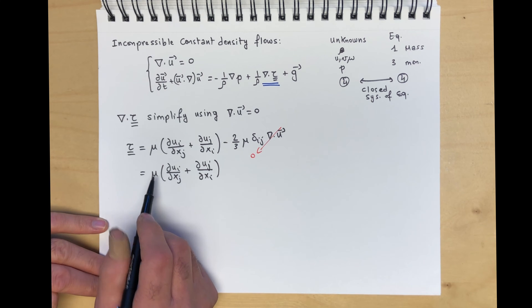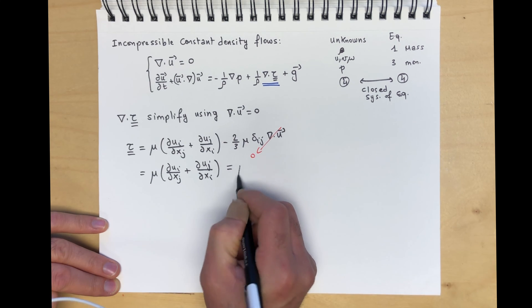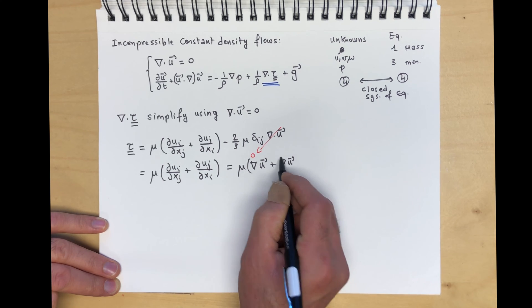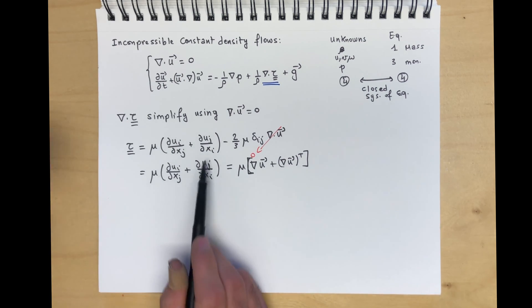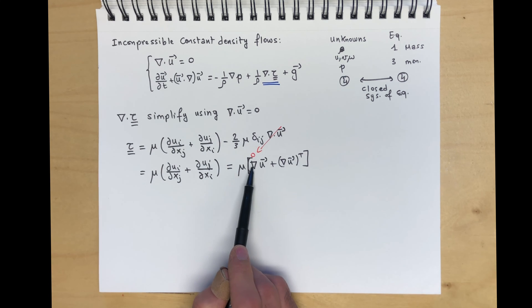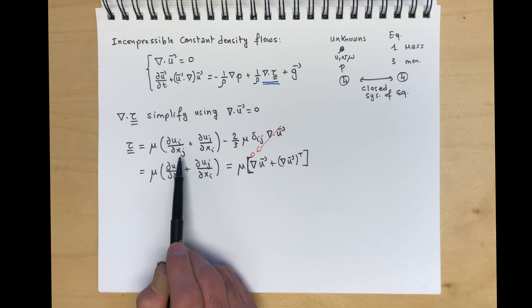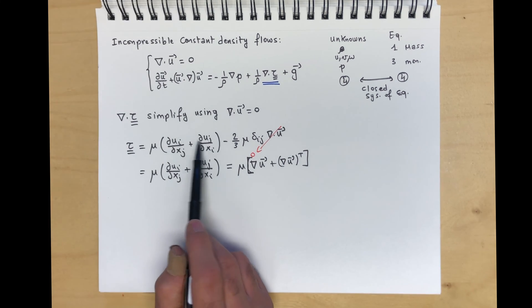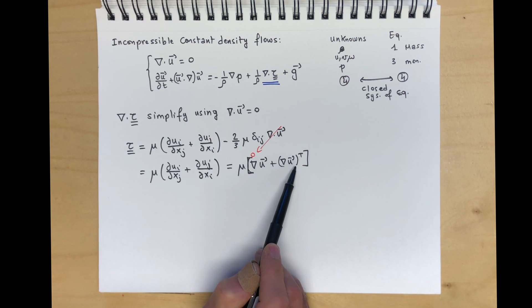There's another form we can write this in: tau = mu(grad u + grad u^T). If you think about it, grad u contains all the derivatives — du/dx, du/dy, du/dz, dv/dx, dv/dy, etc. — and grad u^T is simply the transpose of that.